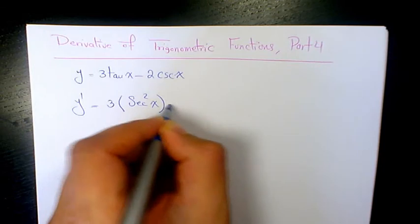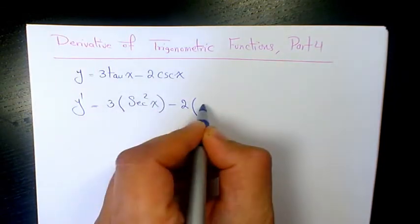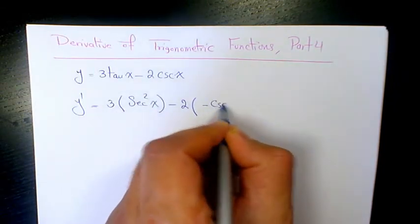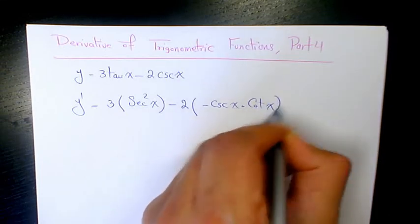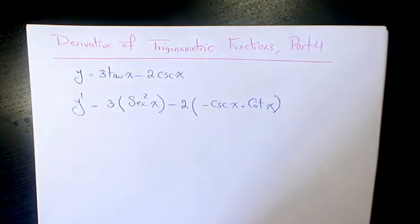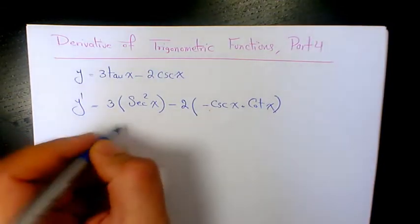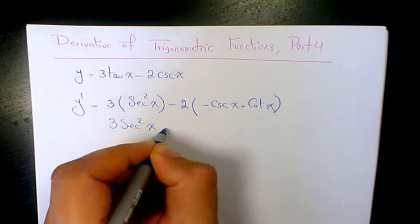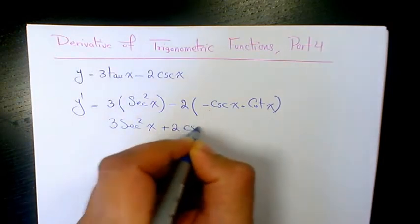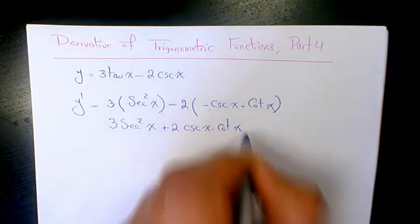Minus 2 times the derivative of cosecant x, which is negative cosecant x times cotangent x. The negative and negative cancel out, so it's going to be 3 secant squared x plus 2 cosecant x times cotangent x.